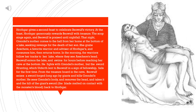Hrothgar gives a second feast to celebrate Beowulf's victory. At the feast, Hrothgar generously rewards Beowulf with treasure. The Shope sings again, and Beowulf is praised until nightfall. That night, Grendel's mother comes to the hall from her home at the bottom of a lake, seeking revenge for the death of her son. She grabs Ashir, a favorite warrior and advisor of Hrothgar's, consumes him, then returns home.